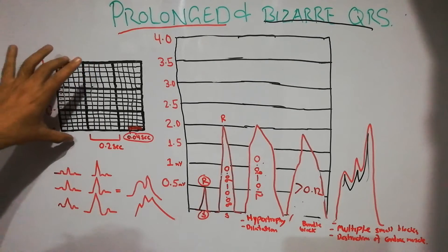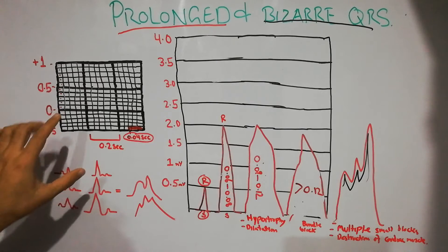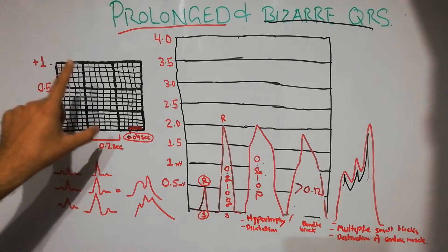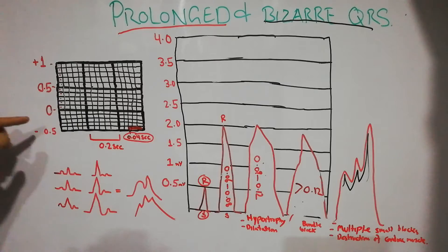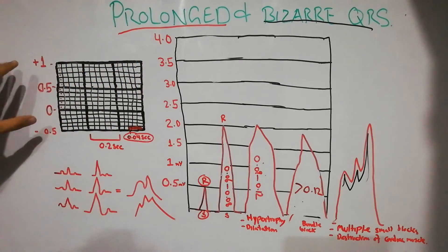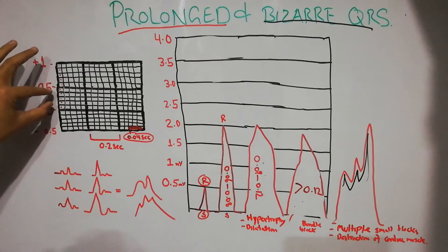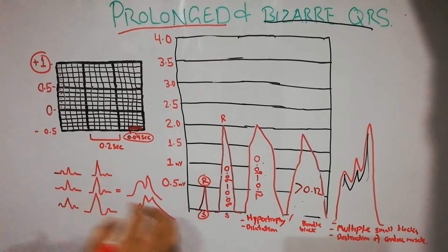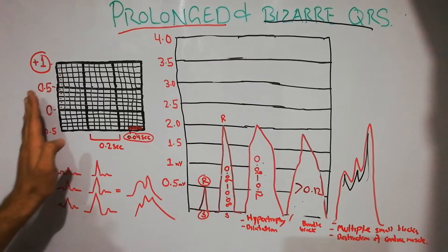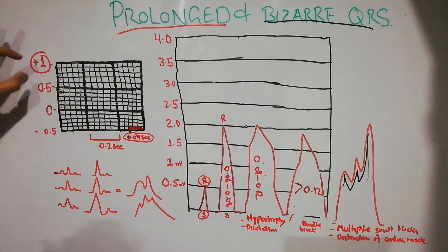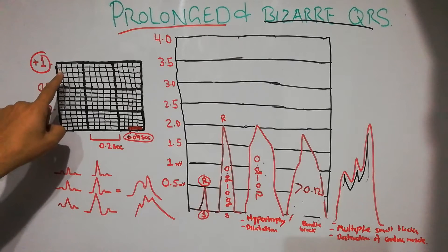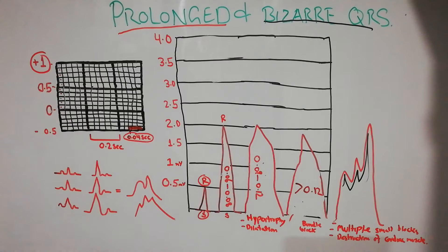To discuss the prolonged and bizarre QRS complex, we need to review the standard calibration of the ECG paper. The ECG paper has small squares and large squares with horizontal and vertical lines. Vertically, two large squares represent one millivolt, so one small square represents 0.5 millivolts. Each large square contains five small squares vertically.